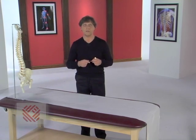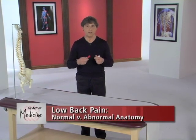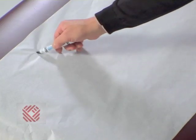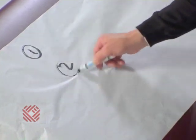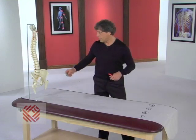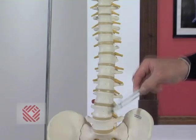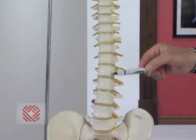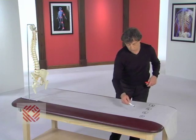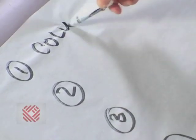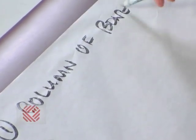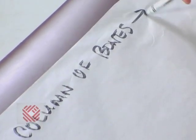Let's first take a look at the anatomy, or the parts list, of your back. There are four categories. First, we have a column of bones called vertebrae. The lower five of which form the lumbar spine, or low back.